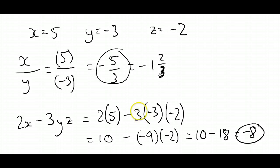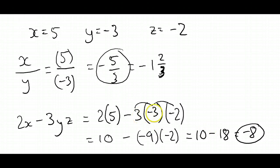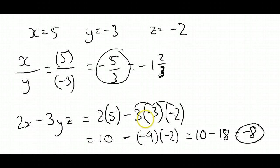Another way of looking at this problem would be to say negative 3 times negative 3 is positive 9, and then positive 9 times negative 2 would be negative 18. We end up with the same result, but there are two different ways of getting there. I find it a little simpler to think of it as 3 times negative 3, then times that by negative 2, and leave the minus sign there. But if the second way makes more sense to you, do it that way.